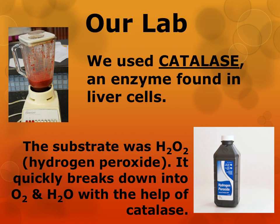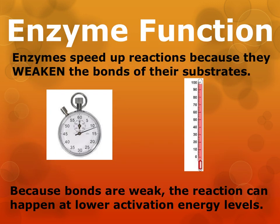And you saw that hydrogen peroxide was quickly broken down into oxygen gas (O2) and also water. These are the two products of the reaction. And if it wasn't for catalase, it would have taken a very long time for hydrogen peroxide to break down on its own. Enzymes can speed up reactions because they weaken the bonds of their substrates. And because those bonds are weak, the reaction can happen at lower activation energy levels as well. This means we don't need a lot of heat to get a reaction to go fast. Enzymes make them happen at normal body temperature.